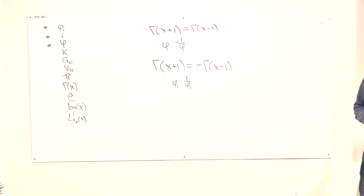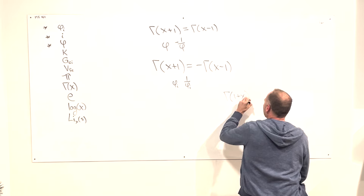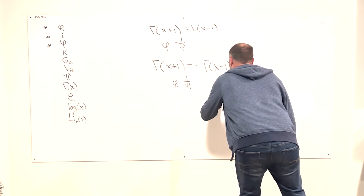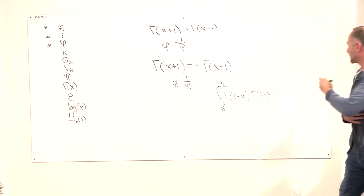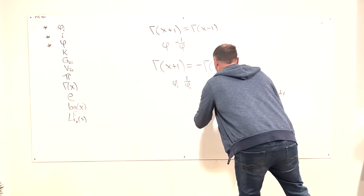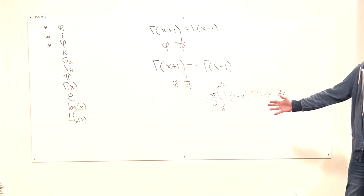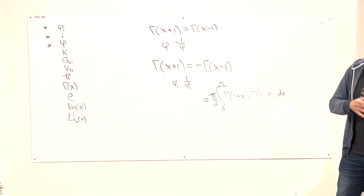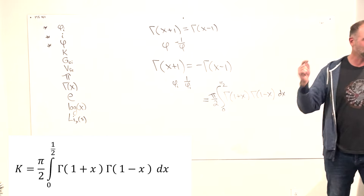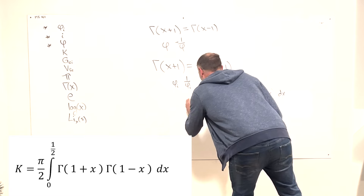Here's another cool connection: if we take Γ(1+x) and Γ(1−x) together, integrating from zero to one-half with a factor of π/2, we get the Catalan constant. This establishes a relationship between the golden ratio, pi, and the Catalan constant — directly related to the hyperbolic figure-eight knot again.